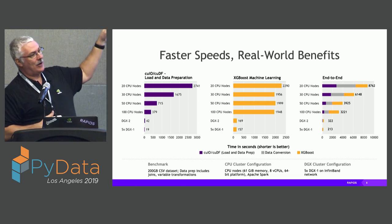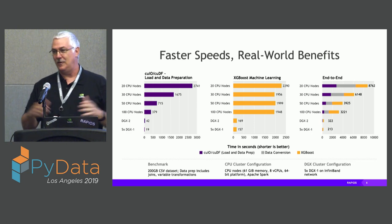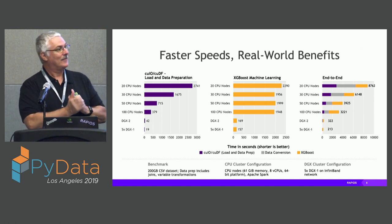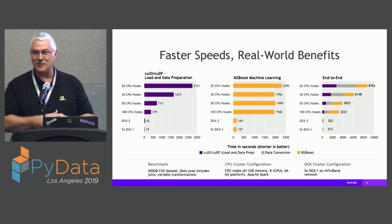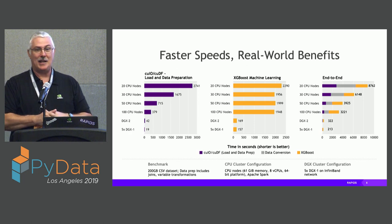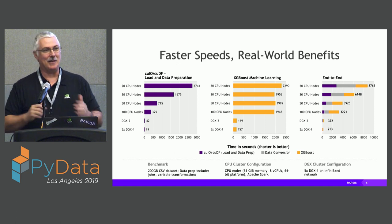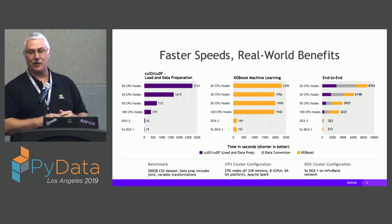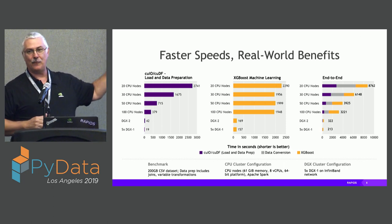We ran this on 20, 30, 50, and 100 nodes of Spark, and also on two of our larger NVIDIA boxes — one with 16 GPUs and five 8-GPU boxes. Even at 100 nodes, Spark took 3,221 seconds — plenty of time to go have lunch and come back. We did it all in 213 seconds, basically enough time to get a cup of coffee and come back to your desk. Our goal was to load all the data and have a prediction faster than Spark could even finish loading it, and we achieved that.